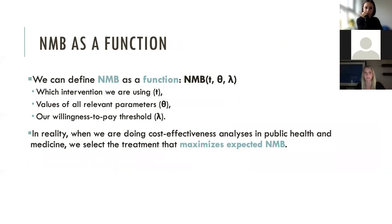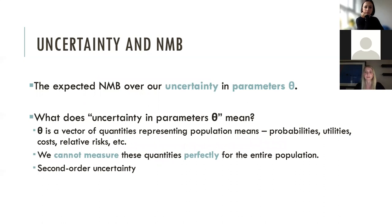We can define net benefit as a function of intervention T, values of all relevant parameters theta, and willingness-to-pay threshold lambda. In practice, when performing cost-effectiveness analysis in public health and medicine, we select the treatment that maximizes expected net benefits. However, there is uncertainty in the estimated expected net benefits, caused by uncertainty in the parameters theta.